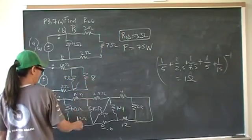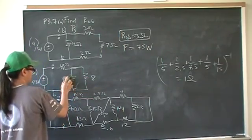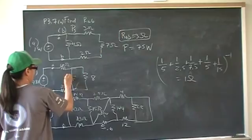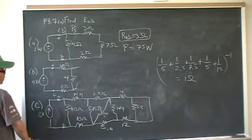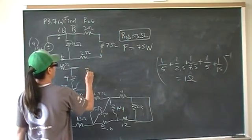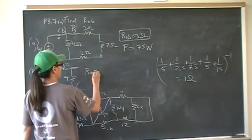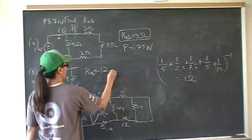We have 8 in parallel with 8, which is 4. So now we have 6 in series with 4 in series with 2. So RAB is equal to 12 ohms.